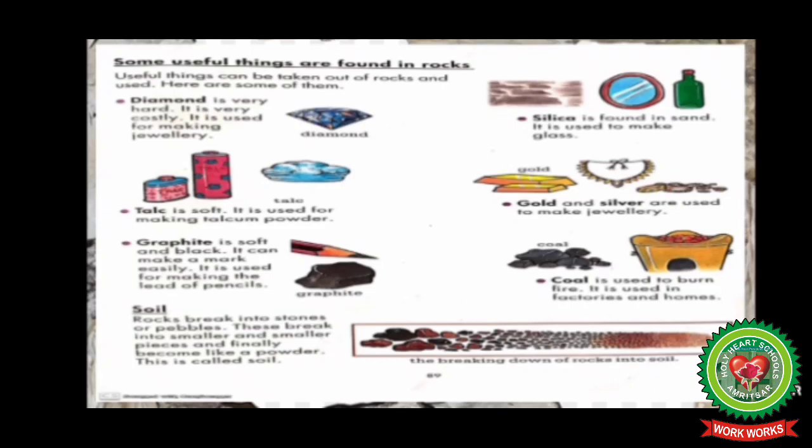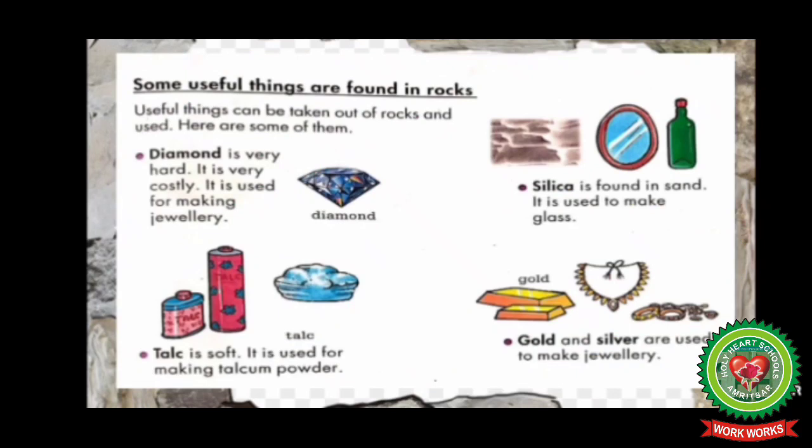Dear students, open page number 89 of your science book. Let's start reading: some useful things are found in rocks. There are different things found in rocks that we use daily in our life. Useful things can be taken out of rocks and used. These things are called minerals, and minerals are found in nature.